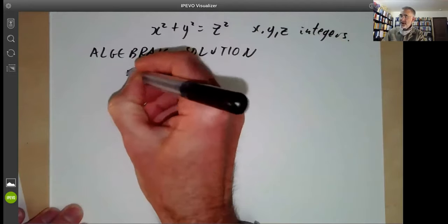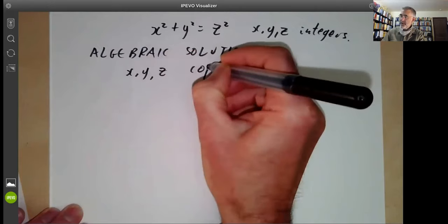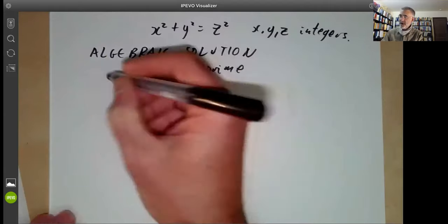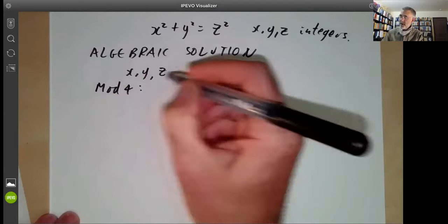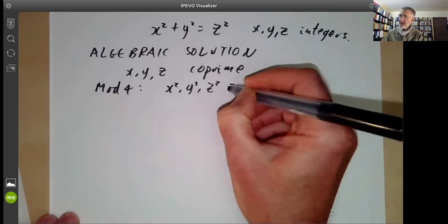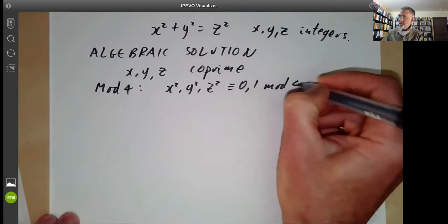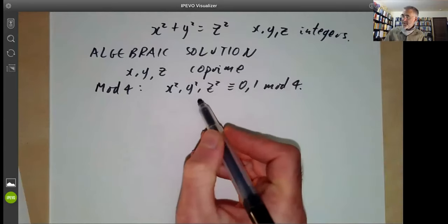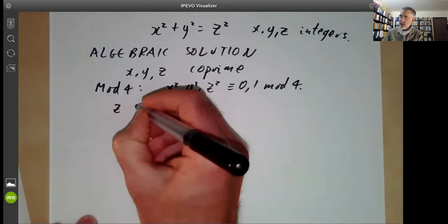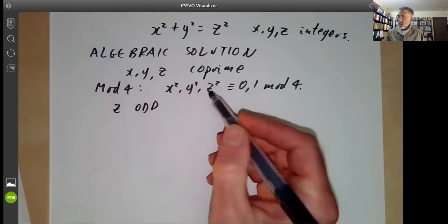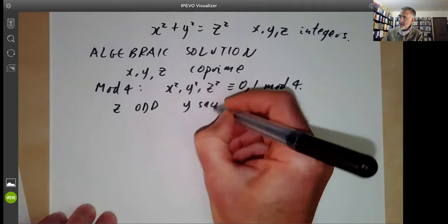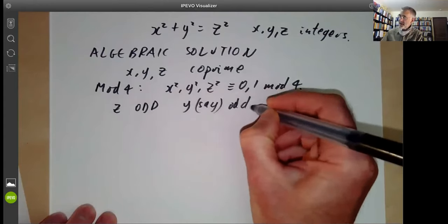We may as well assume that x, y, and z are co-prime, because if any two have a common factor, we can just divide out by it. If we look at the equation mod 4, we know that x squared, y squared, and z squared are all congruent to 0 or 1 mod 4. Since they can't all be even, we see that z must be odd and one of x, y must be even and the other must be odd. So we may as well take y to be odd without loss of generality and x to be even.